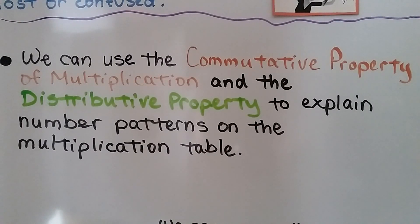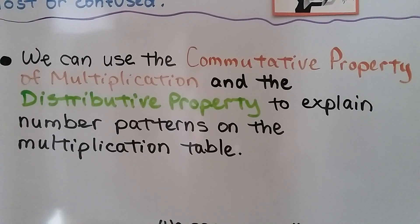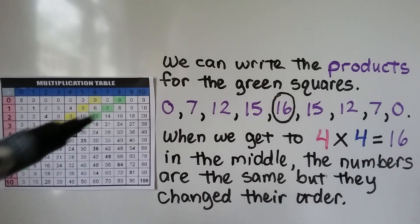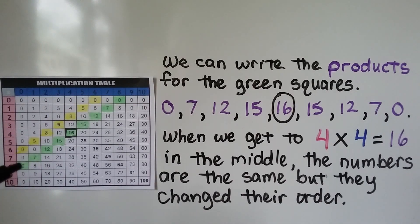We can use the commutative property of multiplication and the distributive property to explain number patterns on the multiplication table. Here we have a multiplication table, and if you look, I have these squares colored green.